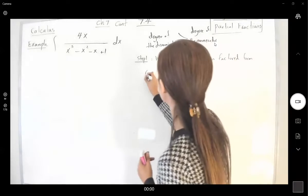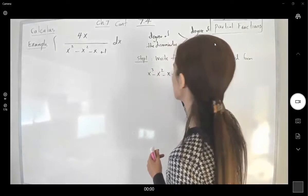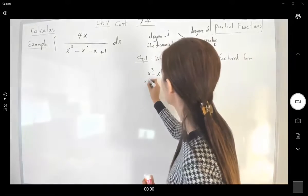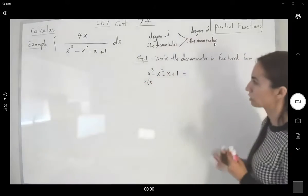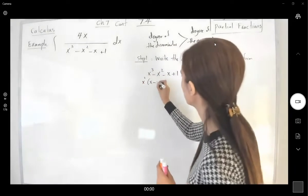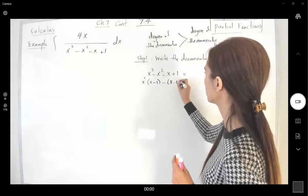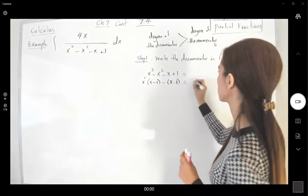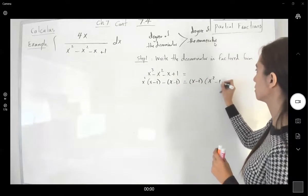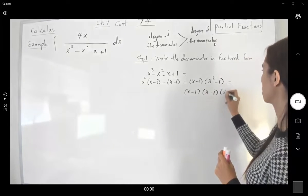Here we have x cubed minus x squared minus x plus 1. I can factor out x squared from the first two terms to get x squared times (x minus 1). Then I factor out a negative sign from the last two terms to get negative (x minus 1). So I factor out (x minus 1), and I'm left with x squared minus 1. This gives (x minus 1) times (x minus 1) times (x plus 1).